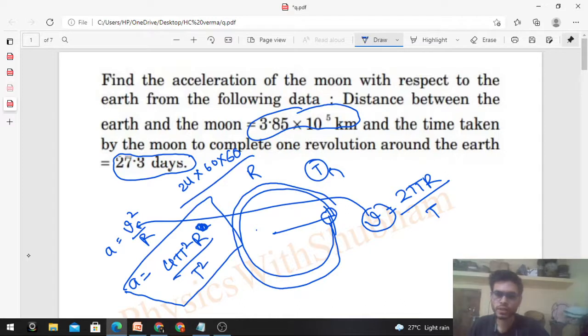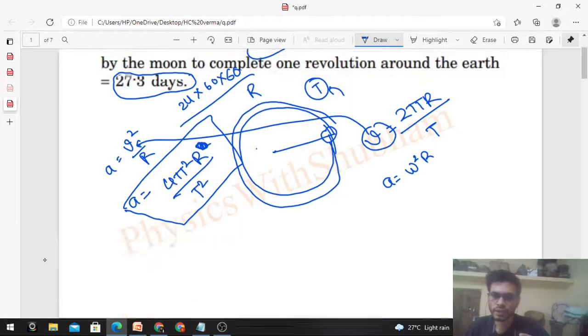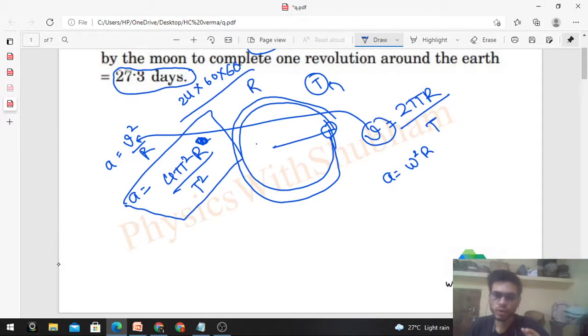Acceleration is also equal to omega squared into R. Omega is the angular speed. In capital T time, the angular distance traveled is the total angle traveled, which is 2π, divided by total time, which is capital T. So that will be the value of omega, the angular speed.